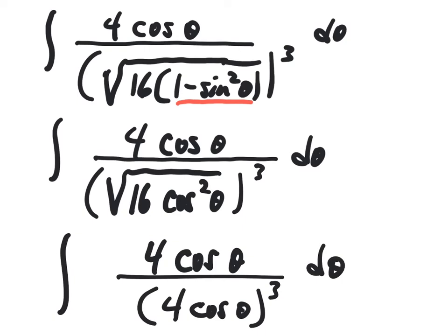If we cancel a 4 cosine theta from top and bottom, that's going to leave a 1 in the numerator and that will take the power of 3 down to 2.